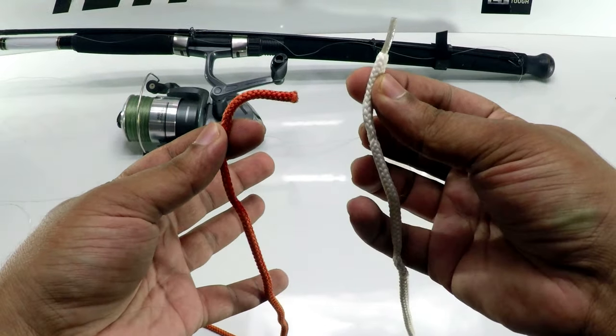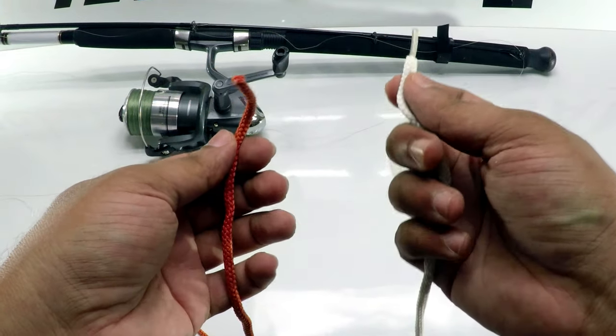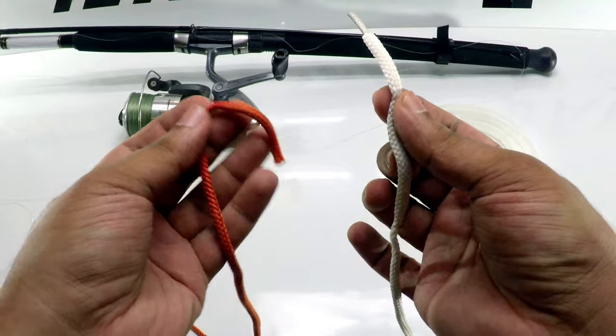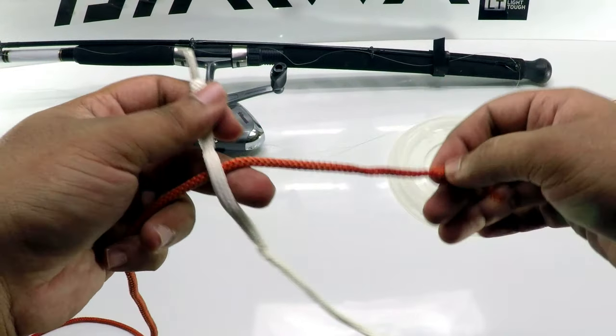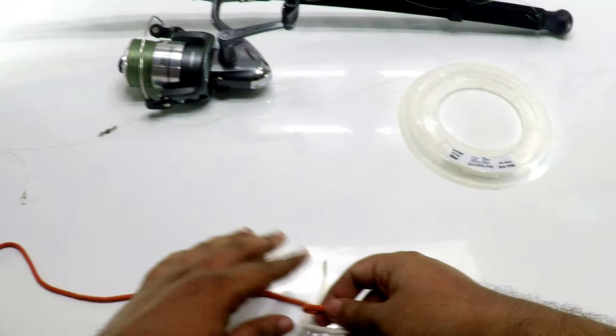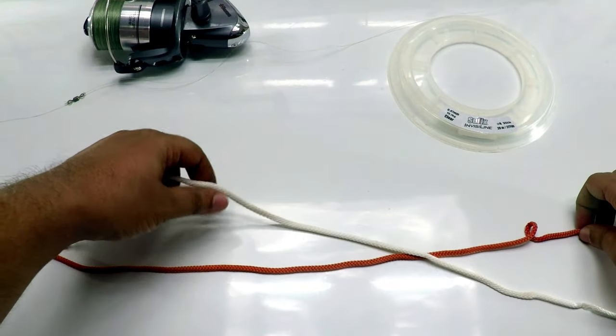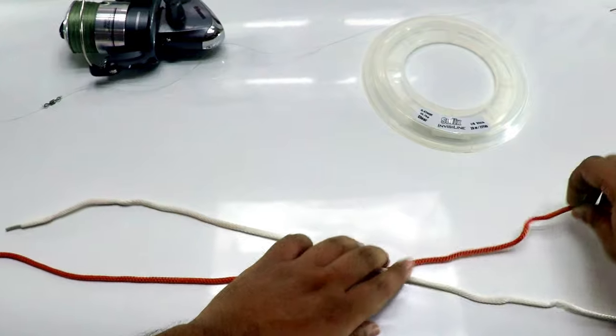First, I'm going to use two different colored ropes so it's easy for you to see. First thing you need to do is overlap these two lines. Take ample line on both sides because you have to twist it and squeeze it in.